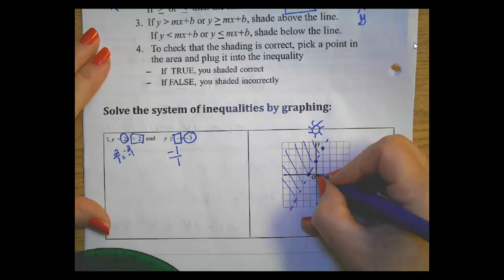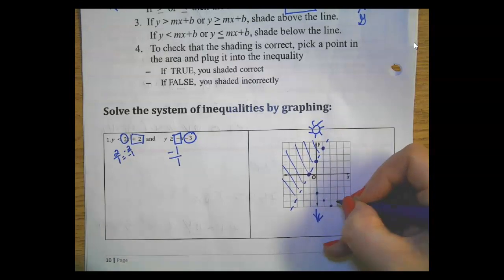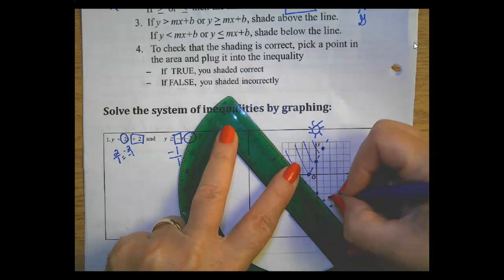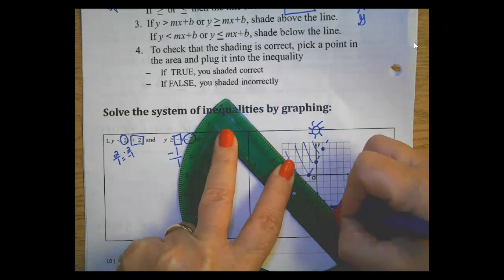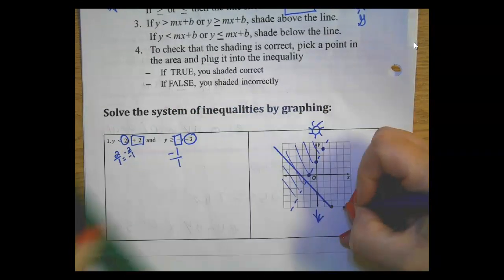I'm going to start at negative 3 and go downwards 1 over 1, downwards 1 over 1. This is a solid line because of the greater than or equal to.